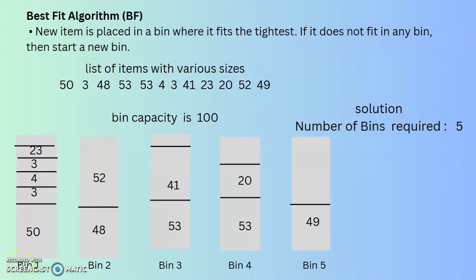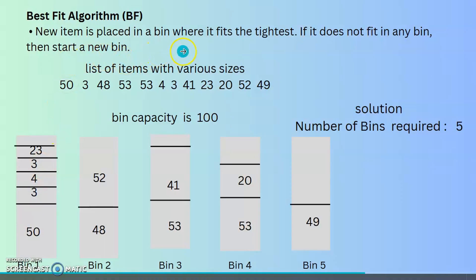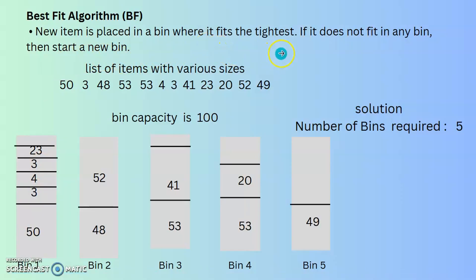The next algorithm is the Best Fit algorithm. The new item is placed in a bin where it fits the tightest — meaning the bin with the least remaining residual space. If it does not fit in any bin, then we start a new bin.